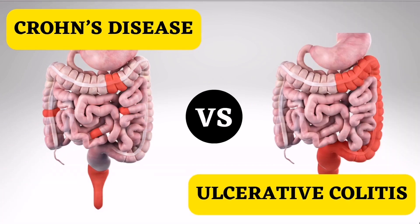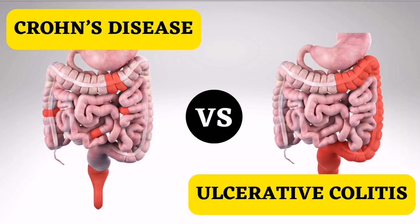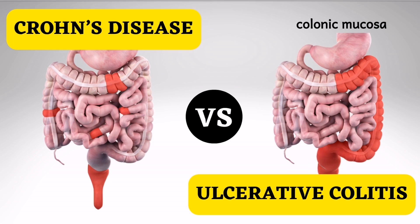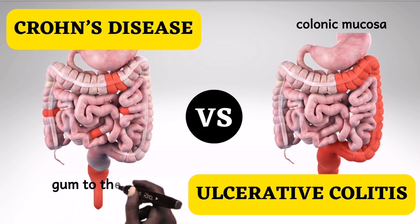Ulcerative colitis and Crohn's disease are the two main forms of inflammatory bowel disease. Ulcerative colitis, as the name suggests, affects the colonic mucosa principally. As shown in the picture, it almost always involves the rectum and may progress to the proximal parts of the bowel, like the sigmoid colon, the descending colon, the transverse colon, etc. Crohn's, on the other hand, may affect the gastrointestinal tract anywhere from the mouth to the anus — sometimes informally described as spanning from gum to bum.